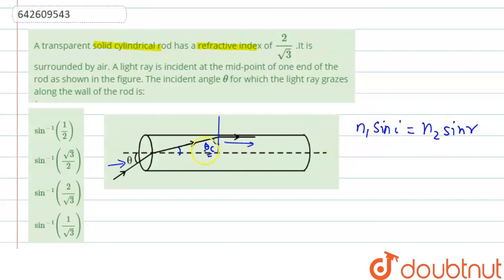Here N1 is the material. So refractive index of the material is 2 by root 3 and sin i is sin theta c. And N2 is air, so I will write 1 for air and sin r is 90 degree so it will be sin 90 degree.